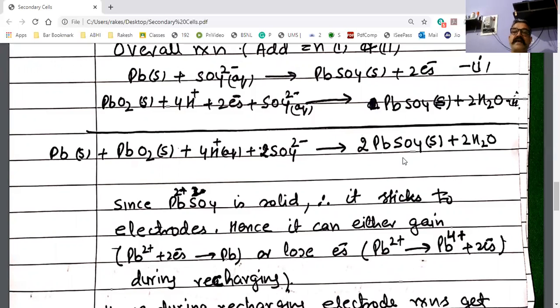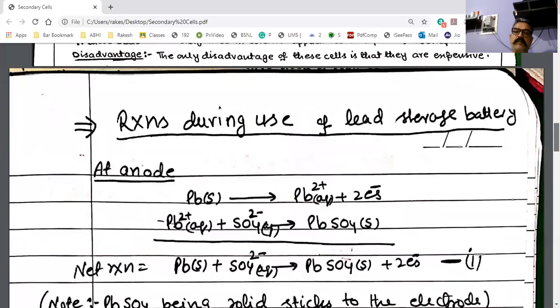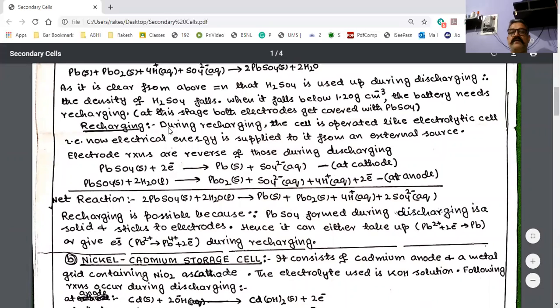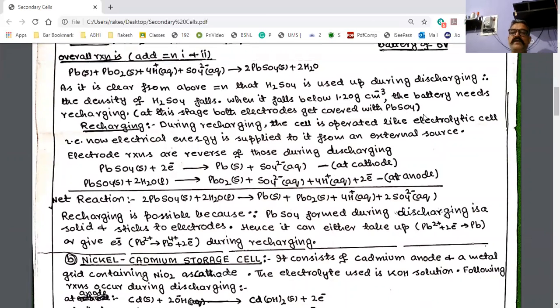Then the cell needs to recharge. When the concentration of sulfuric acid drops to 1.20 gram per centimeter cubed, the battery needs recharging at this stage.